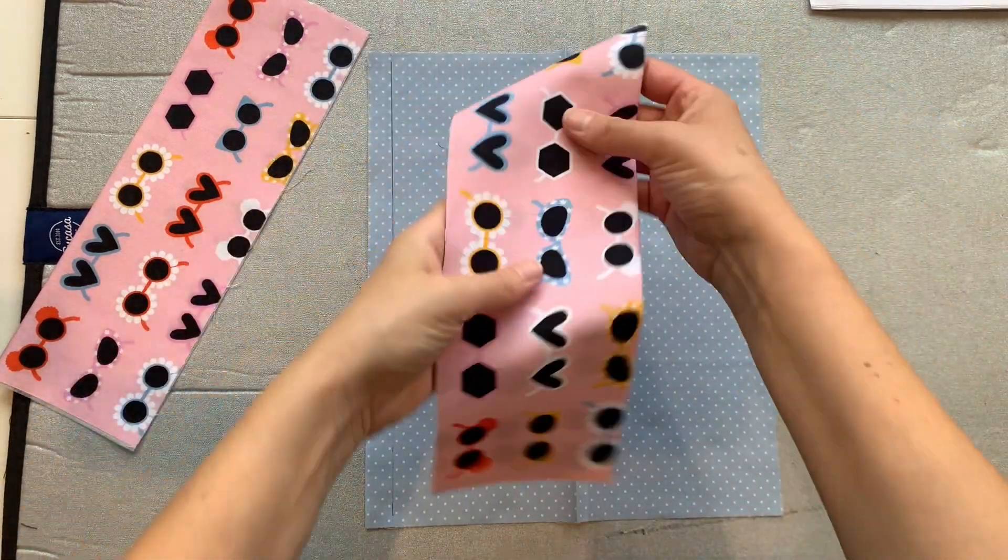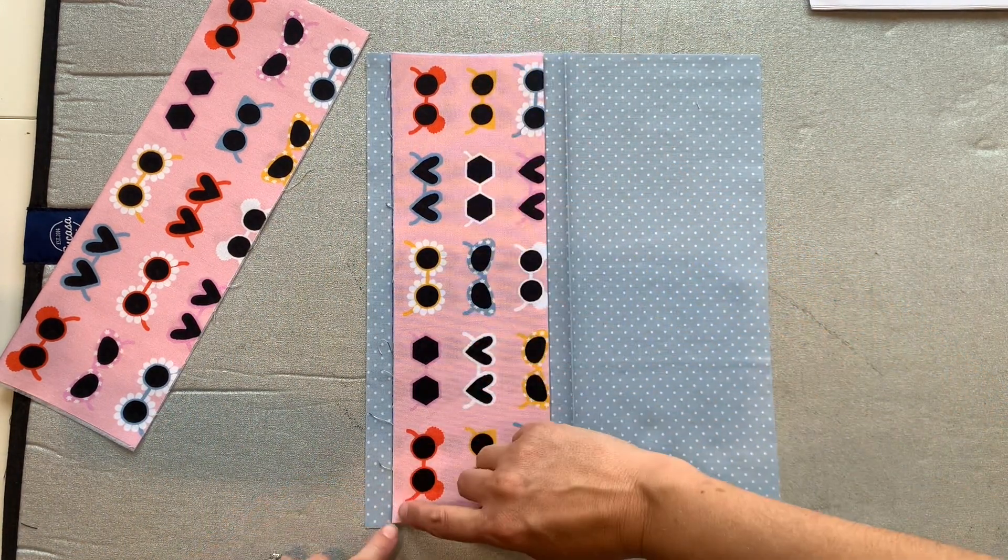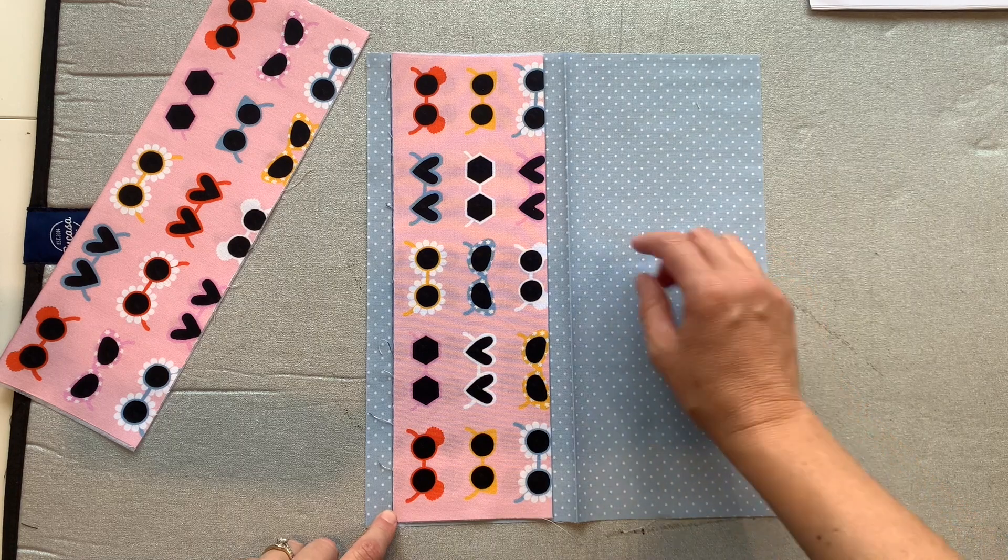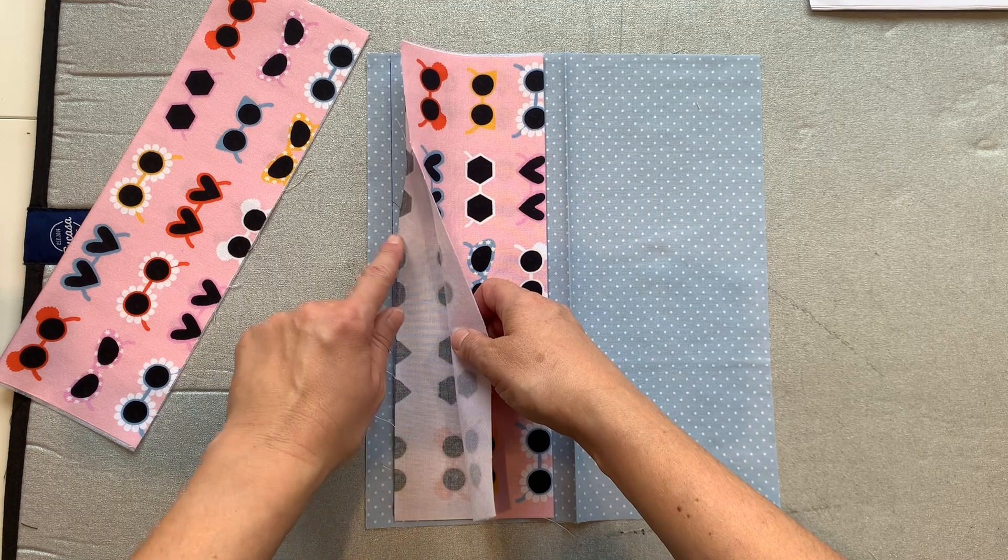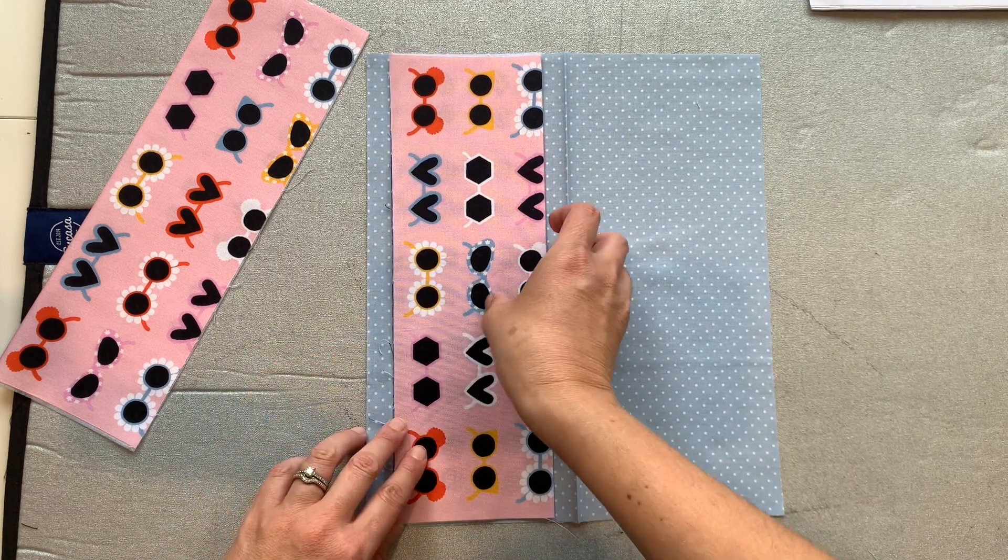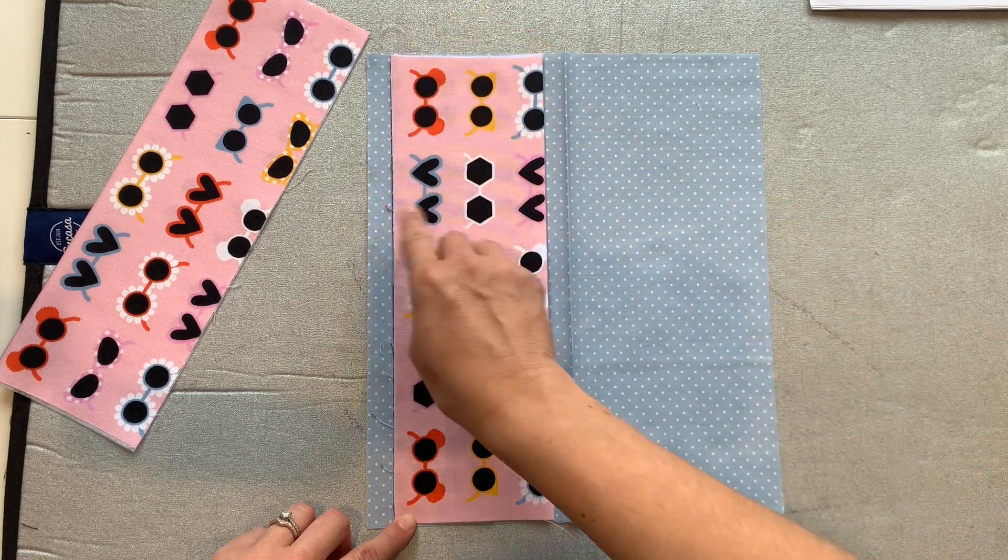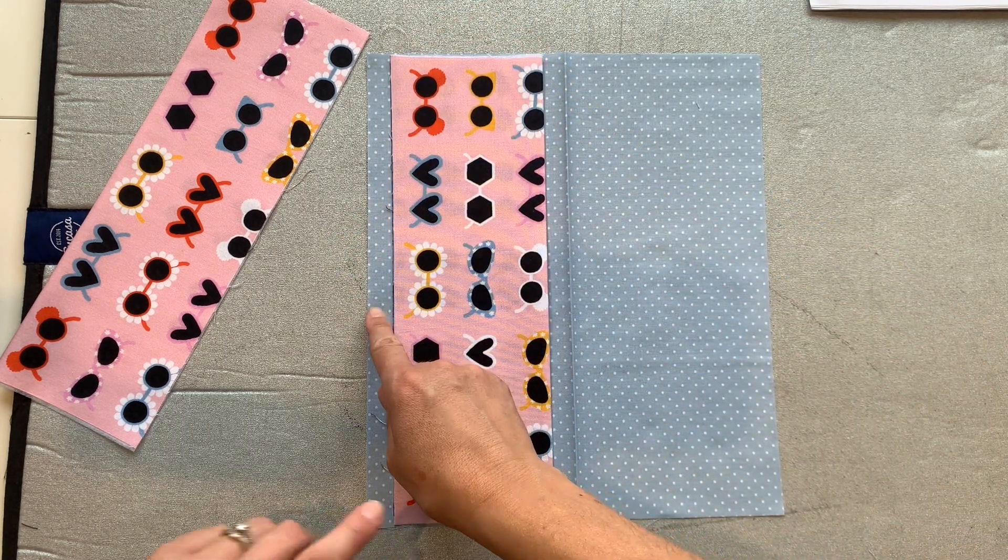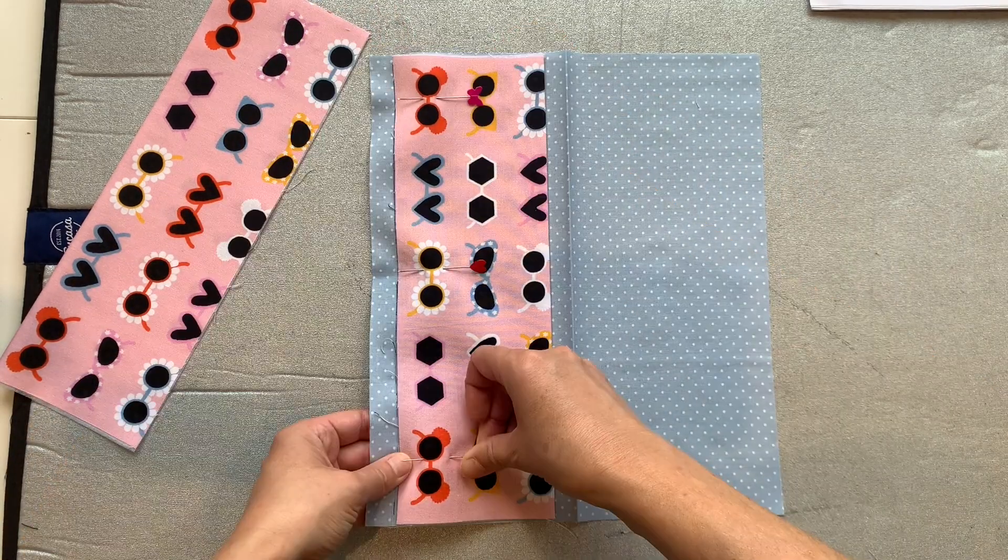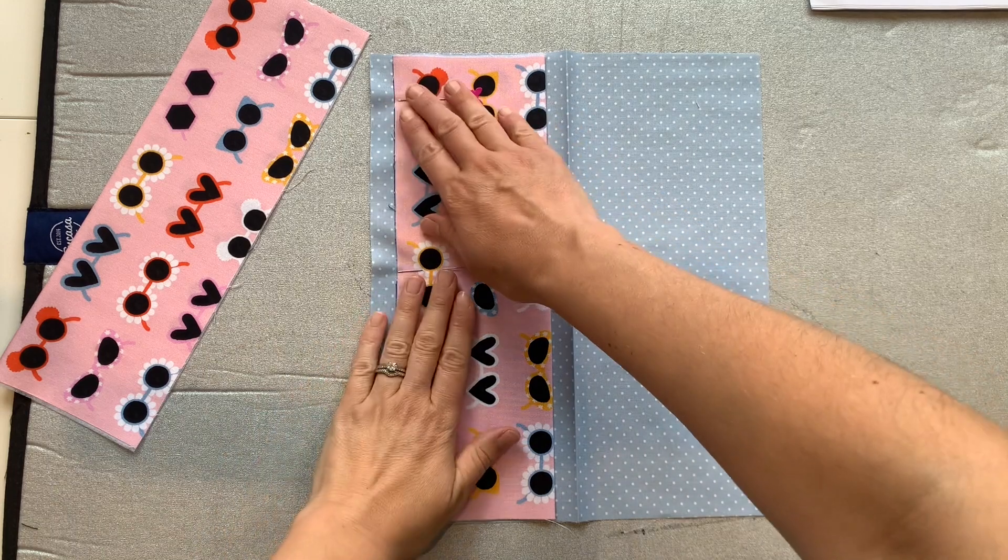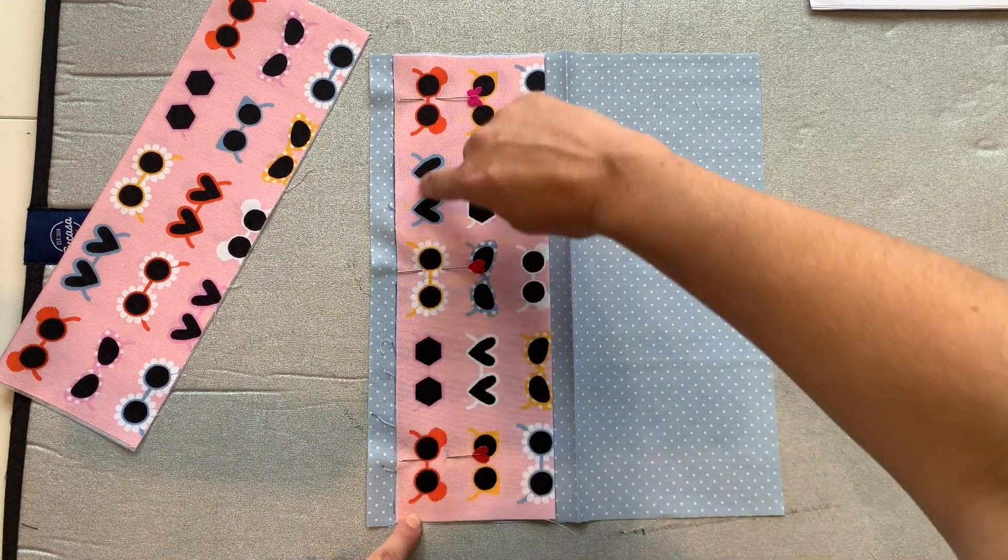Decide which of your two passport pockets you want to be underneath. I'm choosing this one and lay that down on top of your pocket piece so that the raw edges, the folded edges there, the non-folded edges, the two raw edges, lay alongside that line that you've drawn. So this pocket sits 1.5 centimetres up from the bottom. Then I want to pin that in place and then I'm going to sew along here at about a centimetre up from the raw edge.